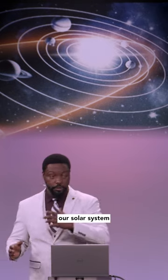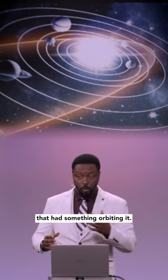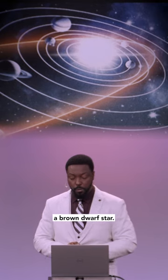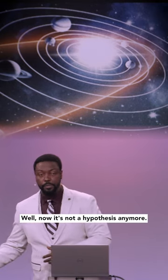Something huge came through our solar system that had something orbiting it. They hypothesized it's a brown dwarf star. Well now it's not a hypothesis anymore.